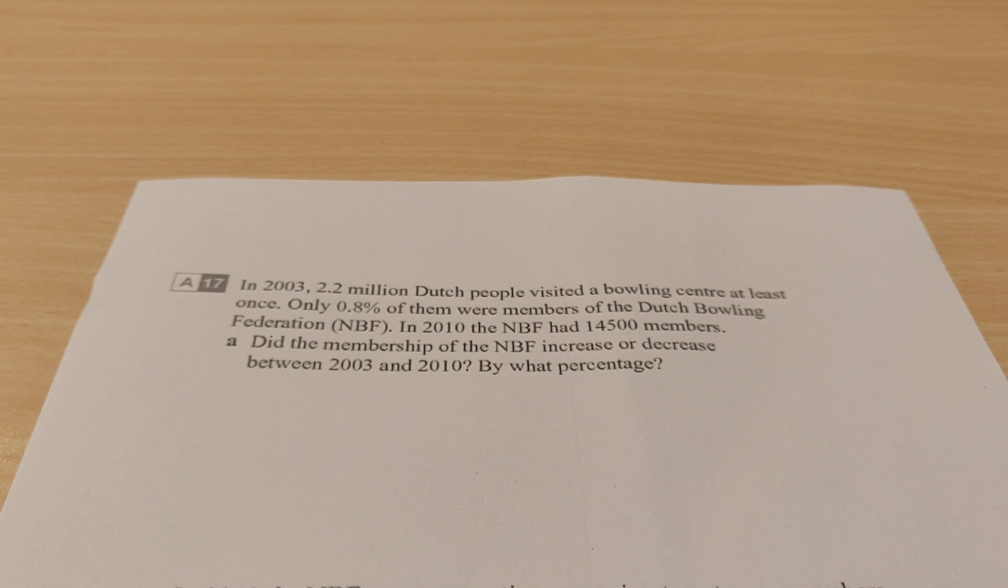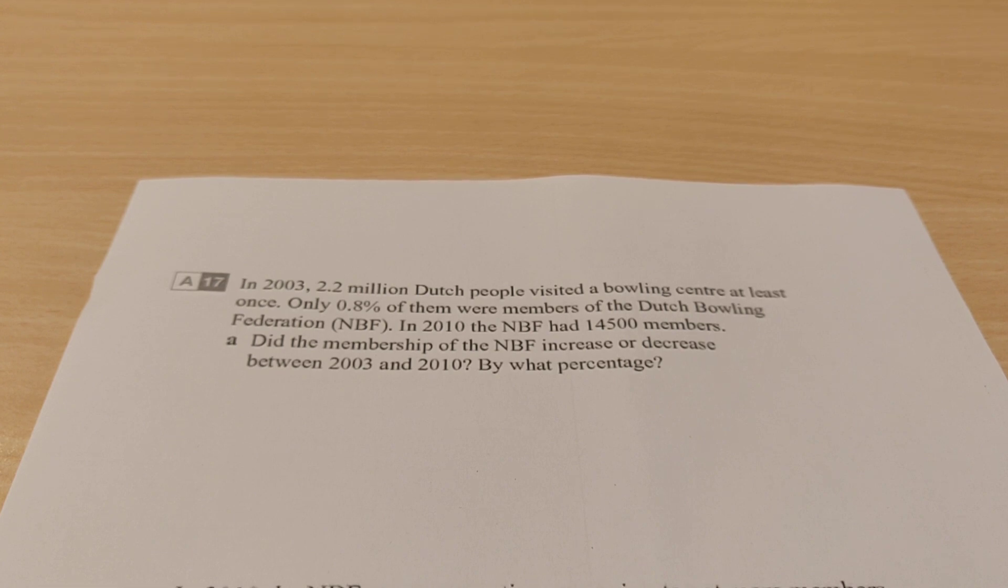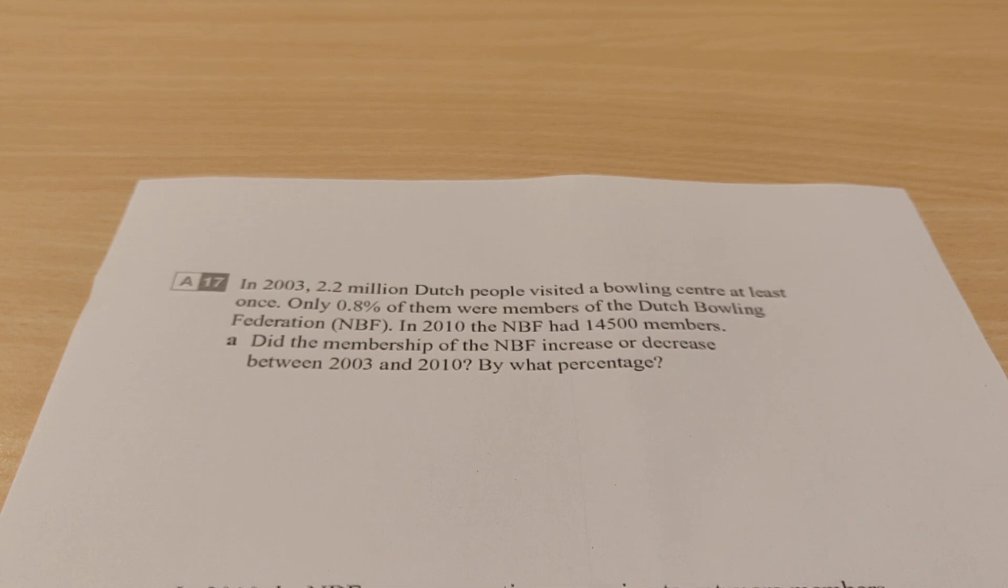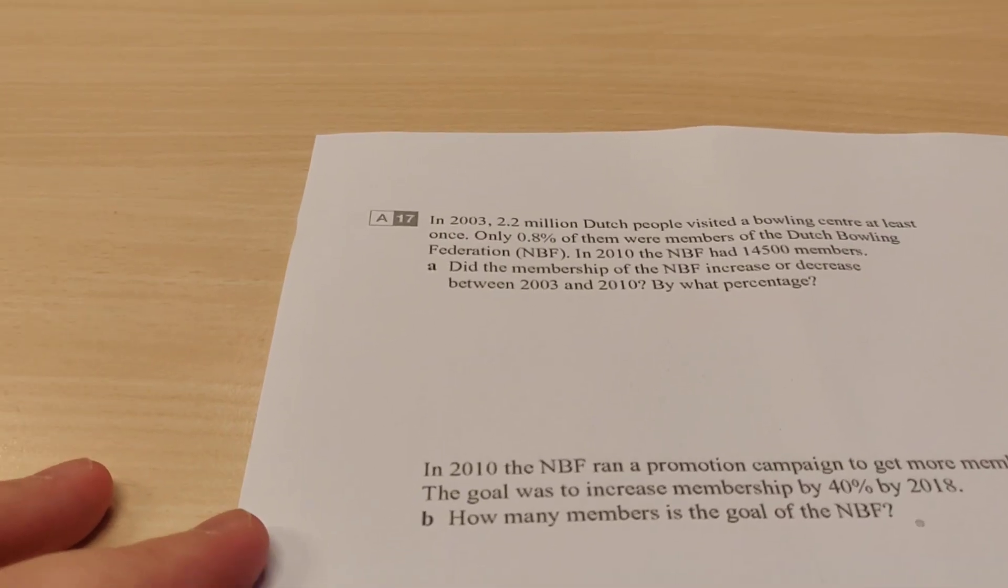It says in 2003, 2.2 million Dutch people visited a bowling center at least once. Only 0.8% of them were members of the Dutch Bowling Federation, the NBF. In 2010, the NBF had 14,500 members. Did the membership of the NBF increase or decrease over that period? We need to know how many members they had for both of those years.